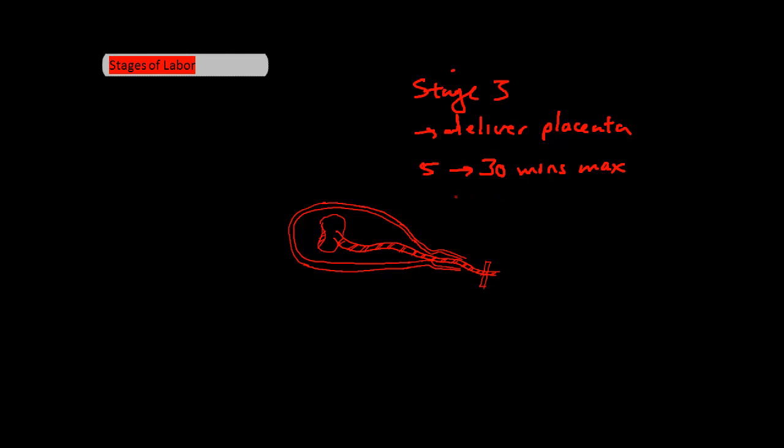This is where you might see oxytocin used to strengthen contractions, as well as the OB-GYN giving suprapubic pressure to prevent uterine inversion. One of the questions I guarantee you'll be asked are the three signs of placental separation.